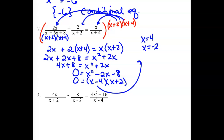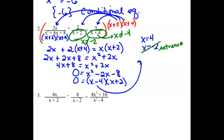We go back and look at our denominators for excluded values. x can't be negative 4 because that would create a zero, and x can't be negative 2 since that would make it zero. Looking at our possible solutions, x equals negative 2 is extraneous — it doesn't work. But x equals 4 is fine, so our solution is 4. This is again a conditional equation.